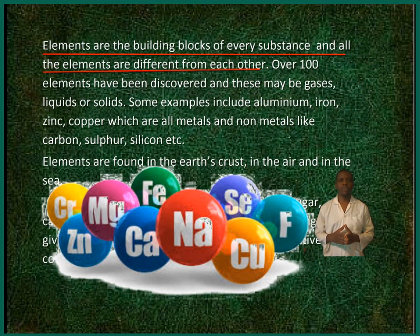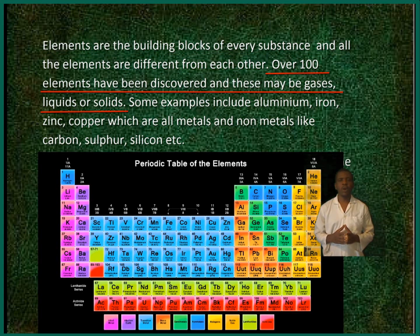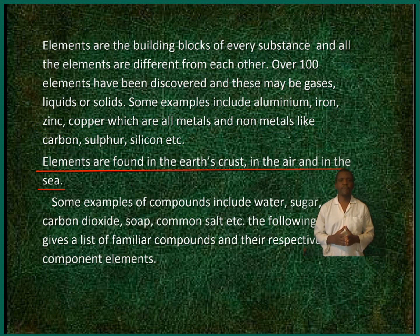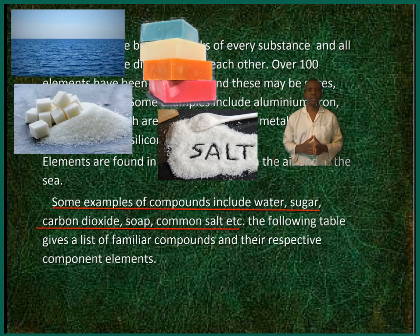Elements are the building blocks of every substance and all the elements are different from each other. Over 100 elements have been discovered and these may be gases, liquids or solids. Some examples include aluminum, iron, zinc, copper, which are all metals, and non-metals like carbon, sulfur, silicon, etc. Elements are found in the Earth's crust, in the air and in the sea.